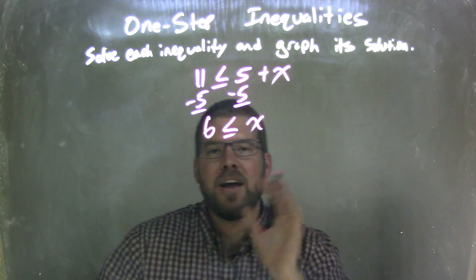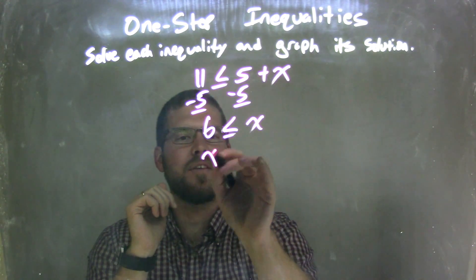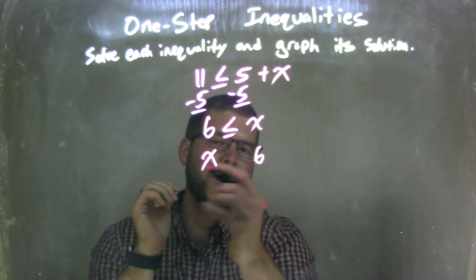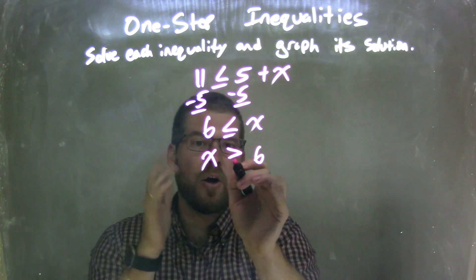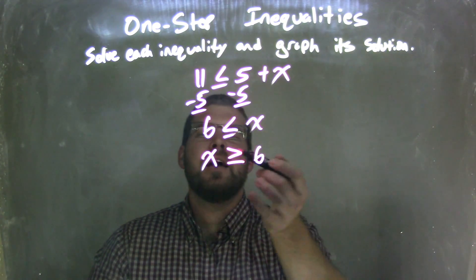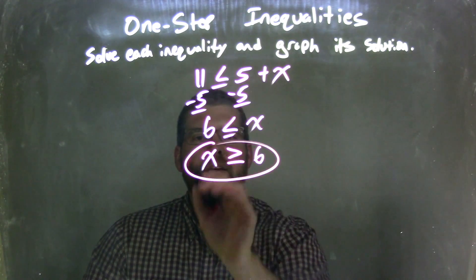But even though x is isolated, I want to have x written first. So I'm going to rewrite this with x first and 6 on this side. And make sure when I do that, I also have to flip the inequality. So when 6 is less than or equal to x, it's the same thing as x is greater than or equal to 6. And that is my final answer.